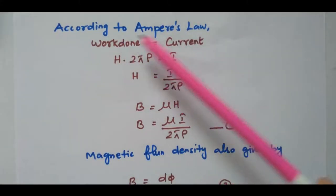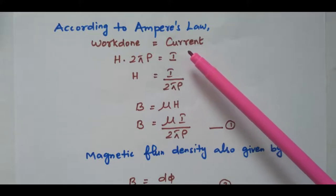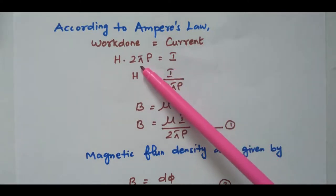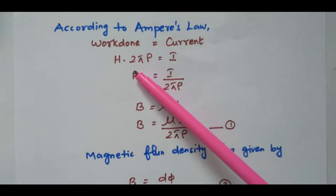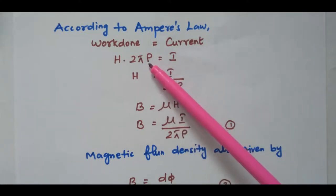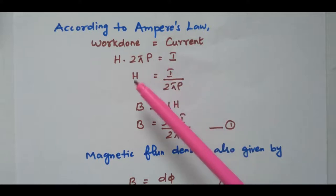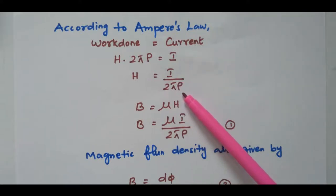Based on Ampere's law, the integral H dot dL equals I. In this derivation, H dot 2πρ equals I, where 2πρ is the circumference of the closed loop at radius rho. From that, H equals I divided by 2πρ. This is the magnetic field intensity.